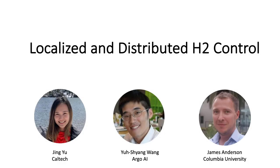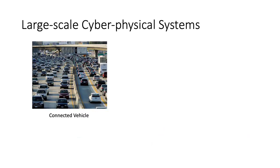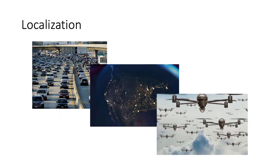In this talk, we discuss the localized and distributed H2 control problem and its solution. My name is Jing. This is joint work with Yuxiao Wang and James Anderson. The application setting here is large-scale cyber-physical systems, such as connected vehicles, the power grid, and robotic swarms. When we design controllers for these large-scale cyber-physical systems, it is desirable for the controller to localize disturbances. This means when a disturbance hits a subsystem, an ideal controller can contain the effect of the local disturbances to a local region. In general, we do not want a local disturbance to cascade to the entire network.